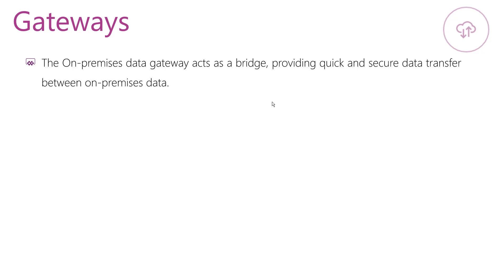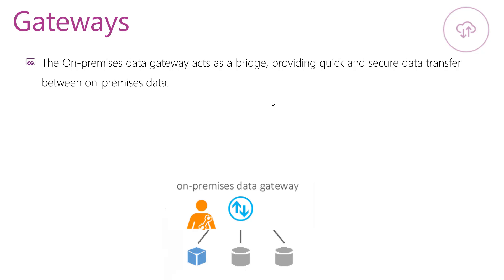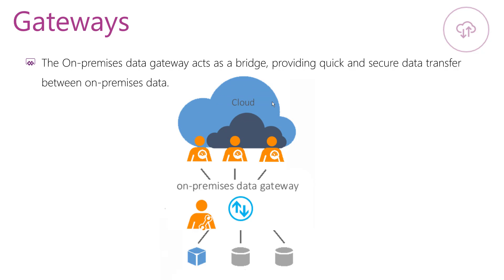The on-premises data gateway acts as a bridge that transfers data quickly and securely between on-premises data that isn't in the cloud and several Microsoft cloud services. By using a gateway, organizations can keep databases and other data sources on their on-premises networks while securely using that on-premises data in cloud services.